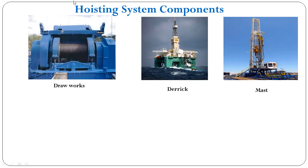This one is the drawworks. As we saw before, the drawworks performs the lowering and raising of the drill string by reeling out and reeling in the drilling line on the drawworks drum. This is the derrick, and this is called the mast. The derrick and mast provide the necessary clearance for the traveling block and hook to move up and down for hoisting operations.